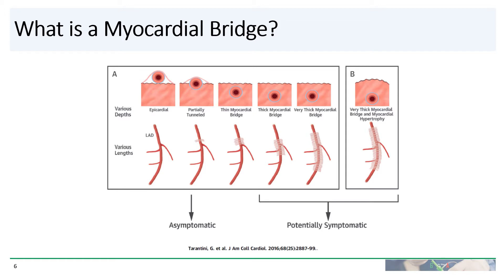Some degree of myocardial bridging is actually fairly common. On average, it is thought that as many as one quarter of adults have some bridging, and the majority of those — 70% — affect the LAD. Most bridges are quite mild and very thin. Thicker bridges or very thick bridges exacerbated by myocardial hypertrophy can potentially cause symptoms.